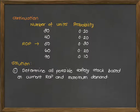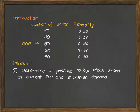The first step is to determine all possible safety stock based on the current ROP and the maximum demand. Since our reorder point is currently at 50, whatever happens — if the demand becomes 30, we have no problem, kasi we are currently at the 50 level of units. If demand is 40, okay lang din, kasi 40 siya and 50 yung ating current level of inventory. The concept of reorder point is you are maintaining your inventory level at that specific level, and once it reaches that point, it triggers you to order additional units.